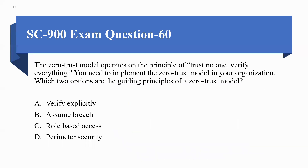Next question: the Zero Trust model operates on the principle of Trust No One, Verify Everything. You need to implement the Zero Trust model in your organization. Which two options are guiding principles of the Zero Trust model? Option A) Verify Explicitly, B) Assume Breach, C) Role-Based Access, D) Perimeter Security. The correct options are A, Verify Explicitly, and B, Assume Breach.